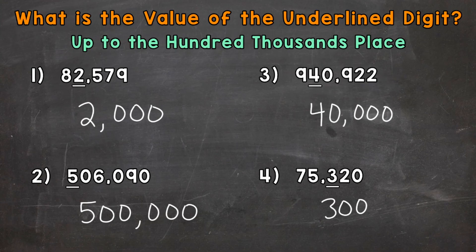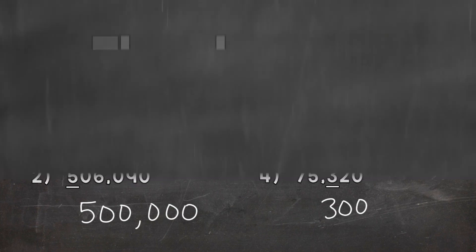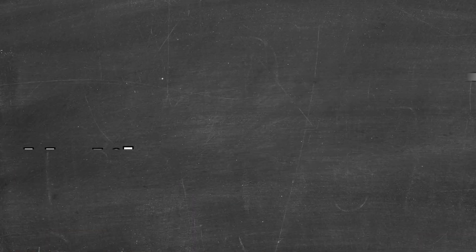So there you have it. There's how you determine the value of an underlined digit. You determine what place that digit is in, and that place is going to determine the value of that digit. So I hope that helped. Thanks so much for watching. Until next time, peace.